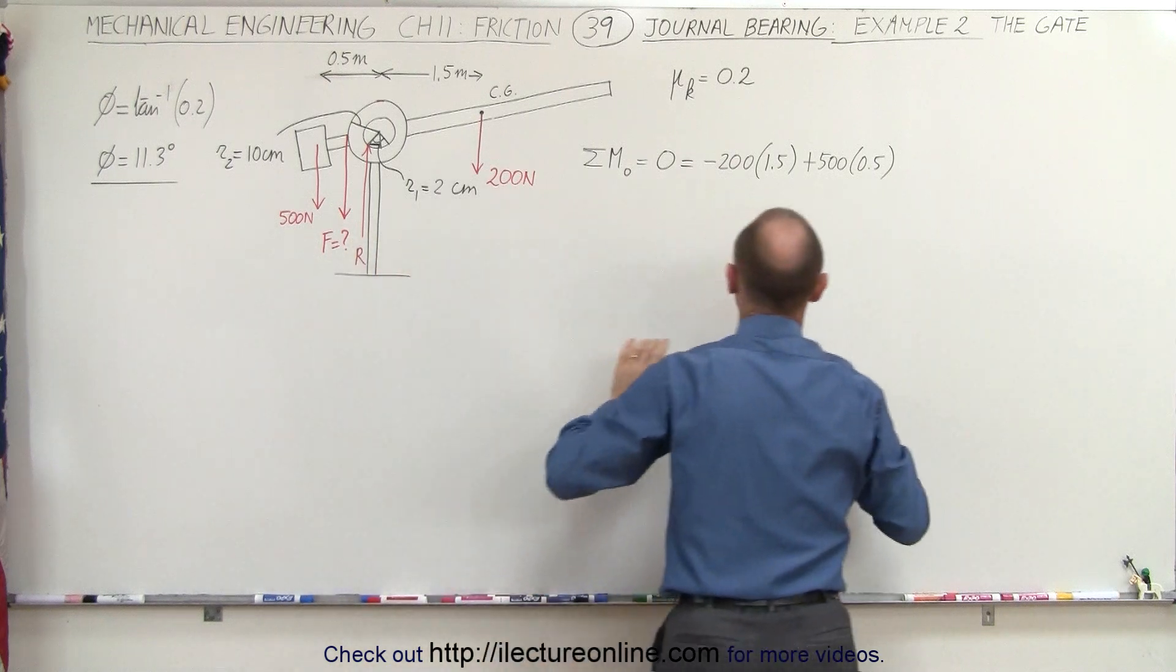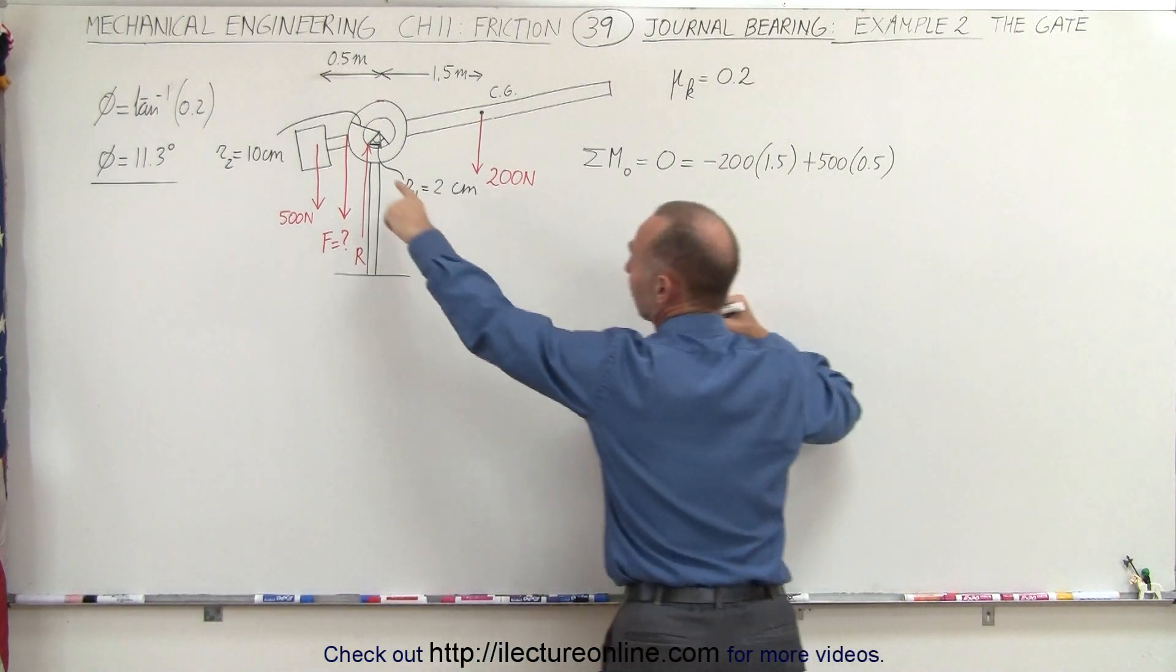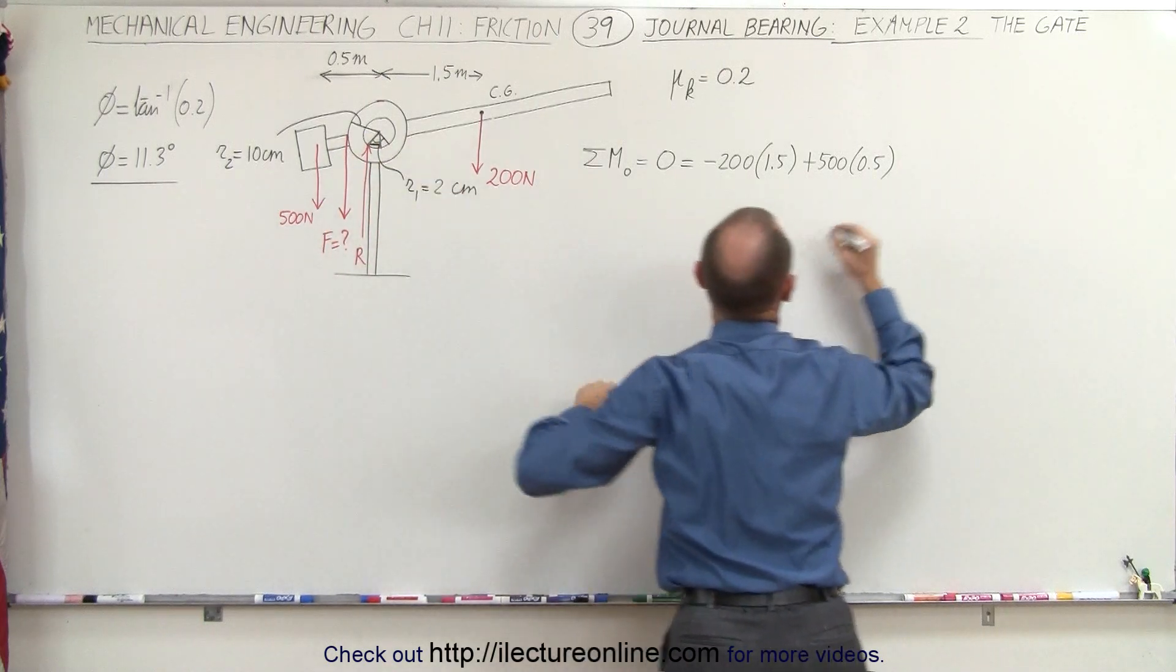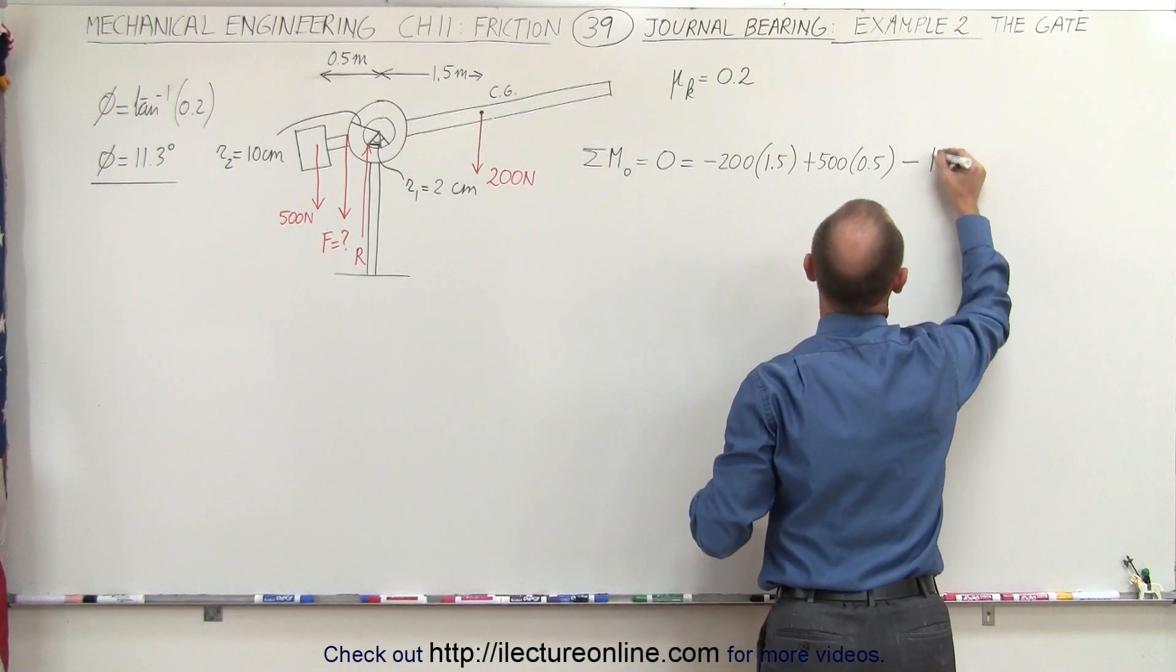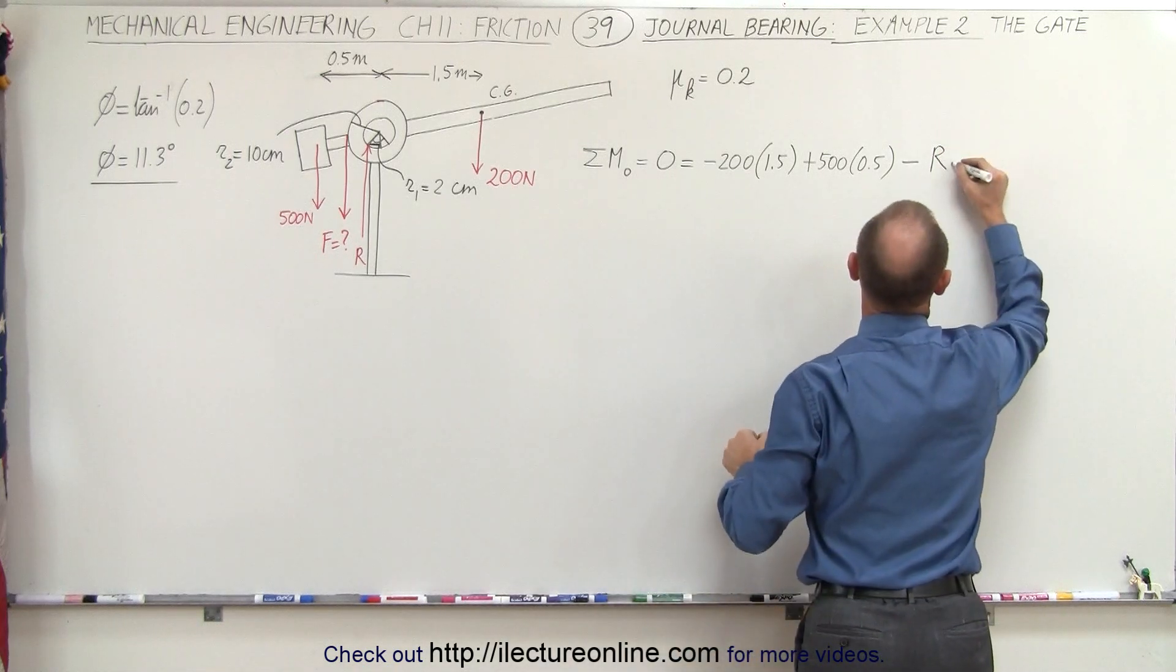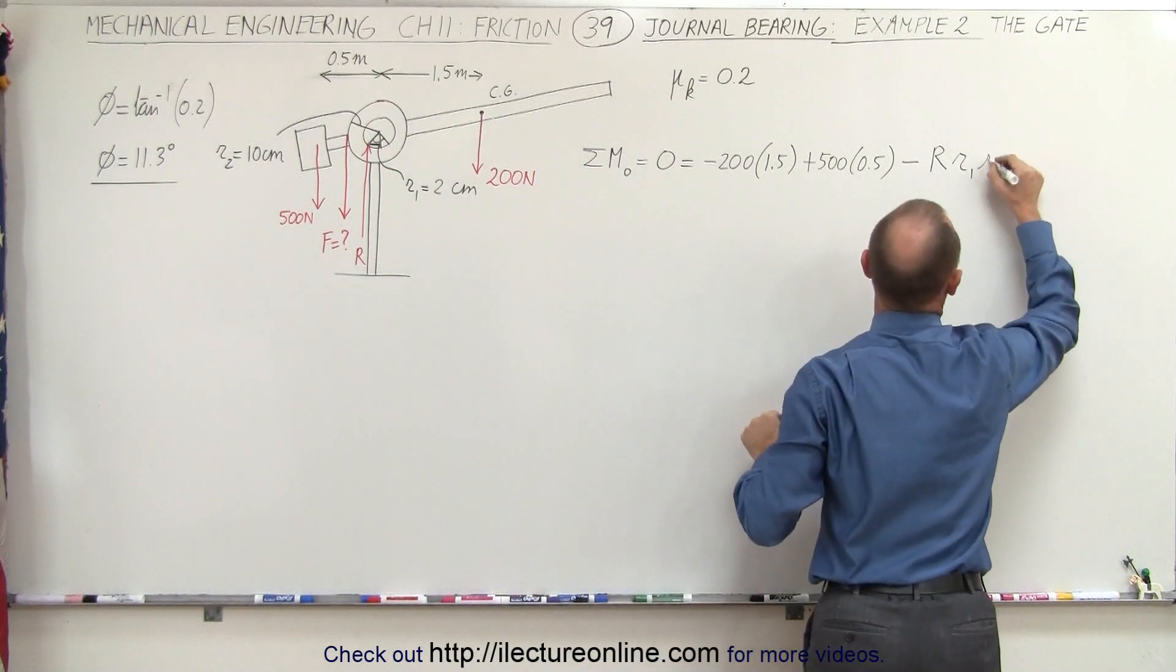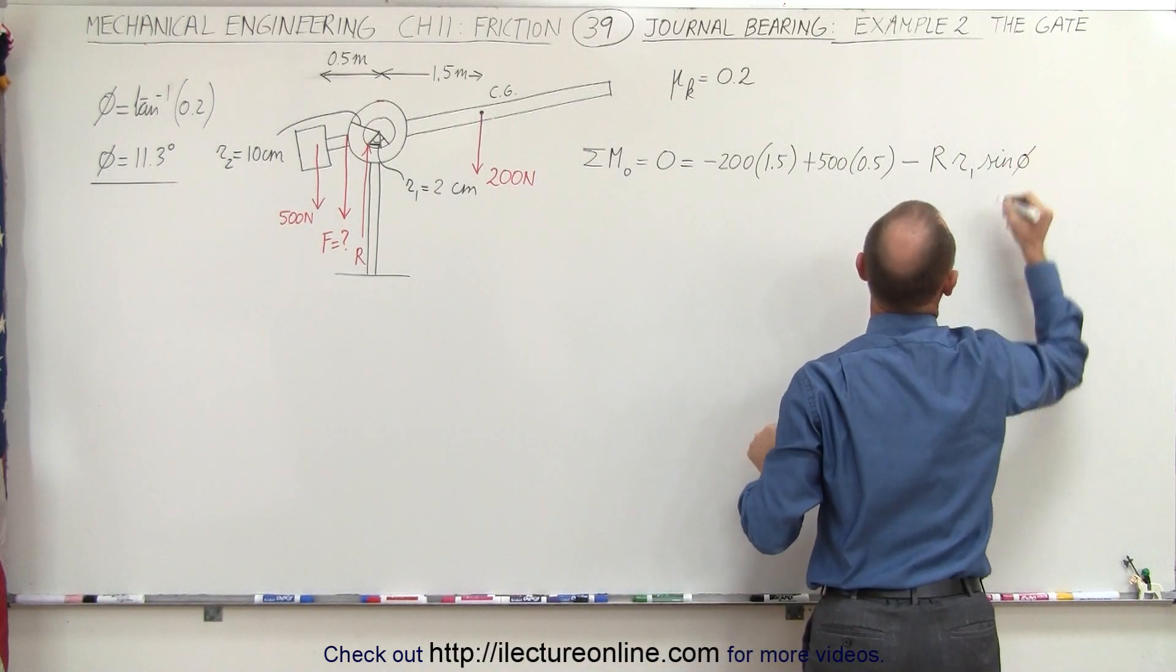Now from the video, a couple videos ago, we remember that the reaction force, and first of all, it's going to be a clockwise direction, so it's minus. It will be R times the moment arm, which is R1, times the sine of the angle phi. We'll find out in just a moment what that is.